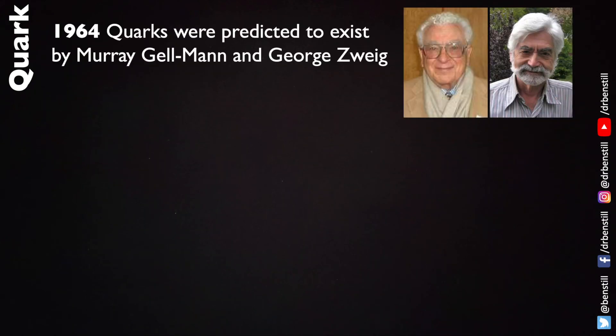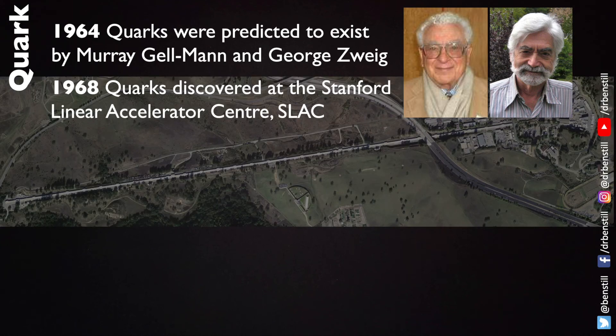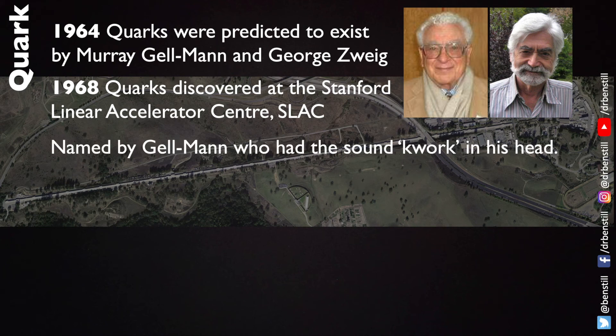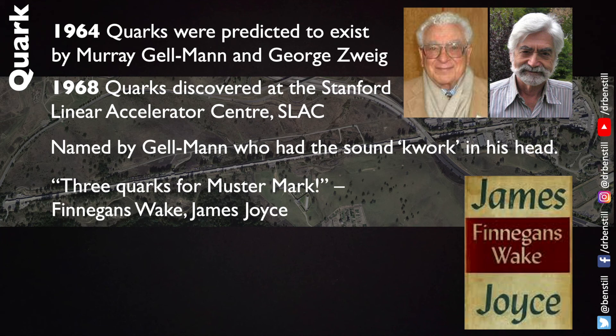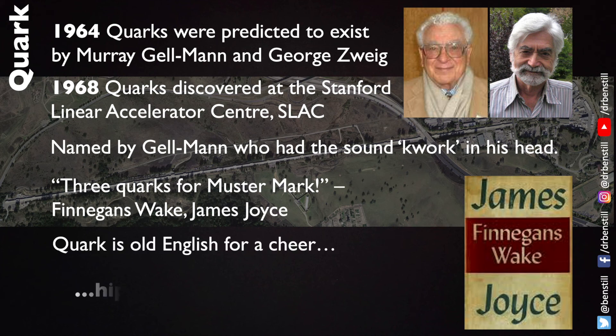In 1964 quarks were predicted to exist by Murray Gelman and George Zweig in looking at the symmetry between the behaviours of different baryon and meson particles. In 1968 quarks were discovered at the Stanford Linear Accelerator Center where electrons were scattered off of protons revealing that inner structure and revealing the quarks inside. They were named by Murray Gelman who had the sound quark in his head but at the time he didn't have the word to fit the sound but eventually he found his word in Finnegan's Wake by James Joyce in the sentence three quarks for muster mark and quark is in old english for cheer so hip hip hooray for the quark.